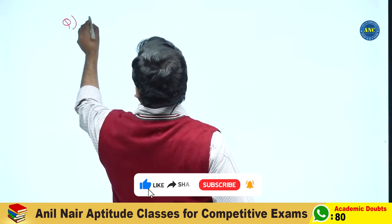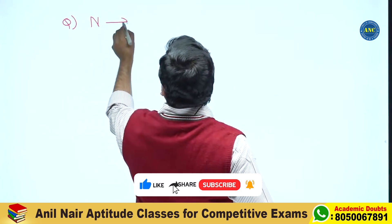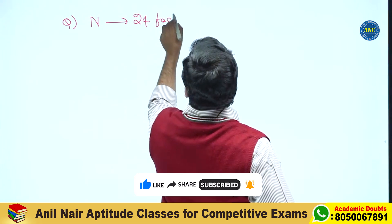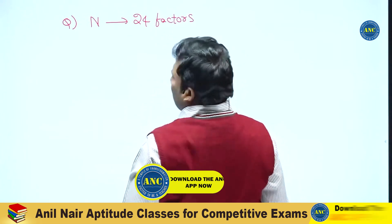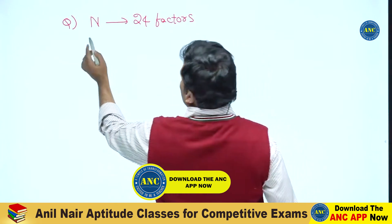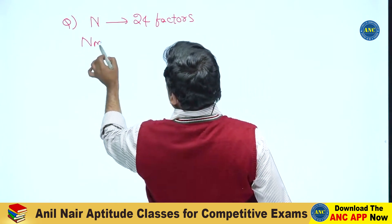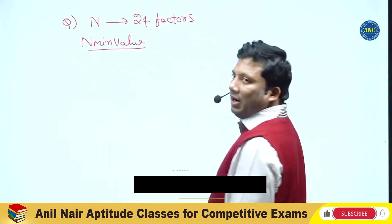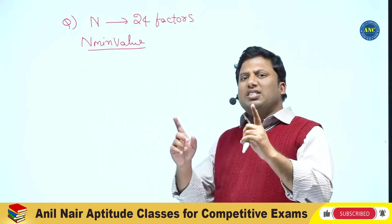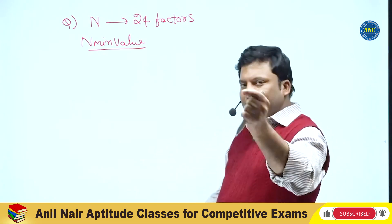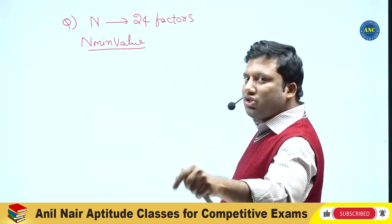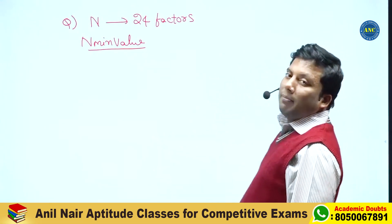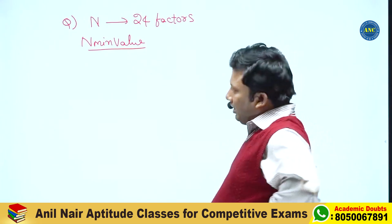There is a natural number that has got 24 factors. What is the minimum value of n? Listen carefully. The notes should contain everything which is new. A natural number has 24 factors.